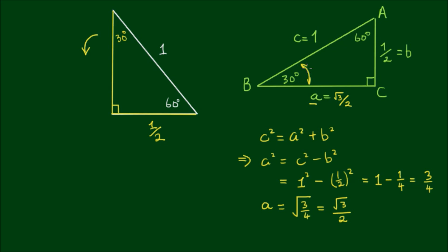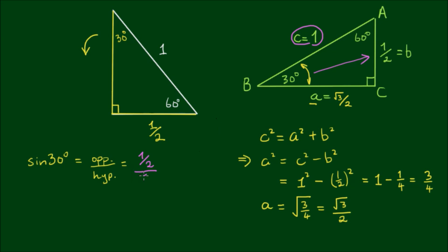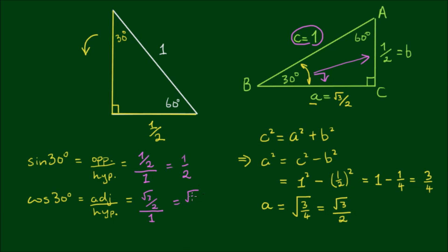Now let's take the angle B. Sine of angle B — sine of 30 degrees — is equal to the ratio of the opposite side over the hypotenuse. Opposite to angle B is the length of little b, which is one half, divided by the hypotenuse of 1. So one half divided by 1 is equal to one half. This is where we get the result that sine of 30 is equal to one half. Similarly, cos of angle B — cos of 30 — is equal to the adjacent side divided by the hypotenuse. Adjacent to the 30-degree angle is the side length square root of 3 over 2, divided by the hypotenuse of 1, giving cos of 30 equals square root of 3 over 2.